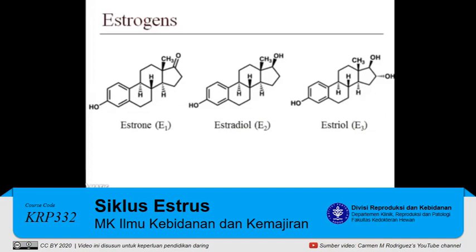There are three types of estrogens that occur in the body: estrone, also known as E1; estradiol, also known as E2; and estriol, also known as E3. The primary hormone we will be discussing throughout this semester is estradiol, E2. However, I use the terms estrogen and estradiol interchangeably.